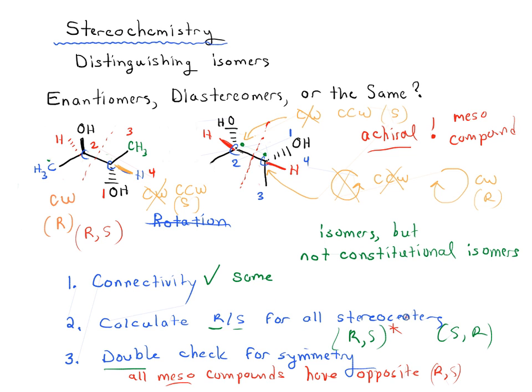This is why you double check for symmetry. So this is achiral and this is also achiral because there's also a plane of symmetry here. So these are actually meso compounds. And because they're meso compounds, it's basically two different ways of drawing the same molecule. So they're actually, in this case, the same.